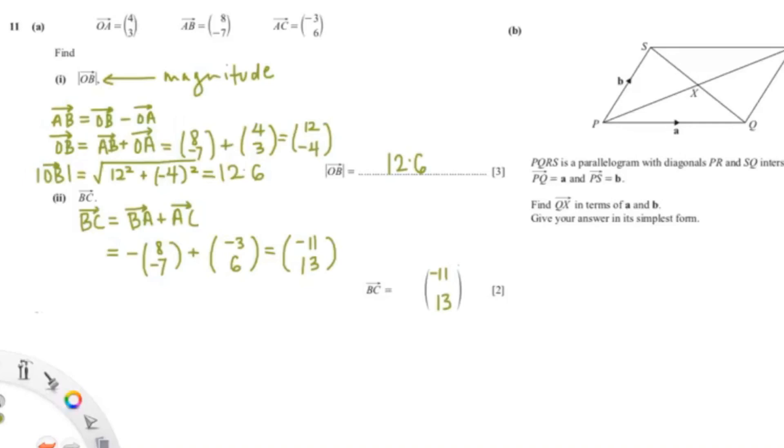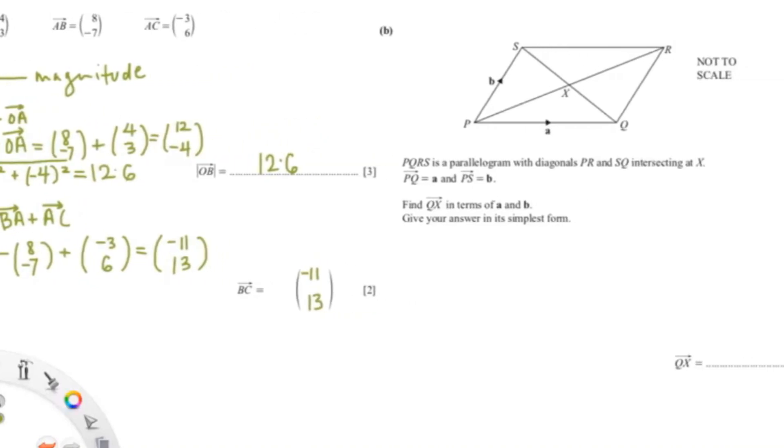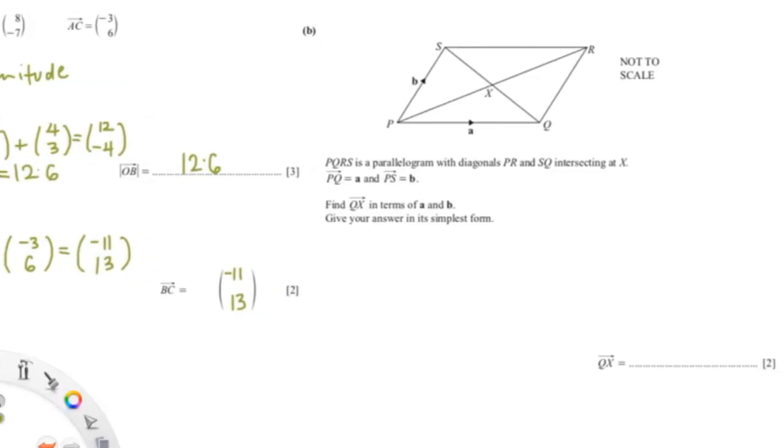So now let's move on to the next question. As you can see, the next question has given us a diagram. It's a parallelogram with diagonals PR and SQ intersecting at X. So PQ is A and PS is B. Find QX in terms of A and B.